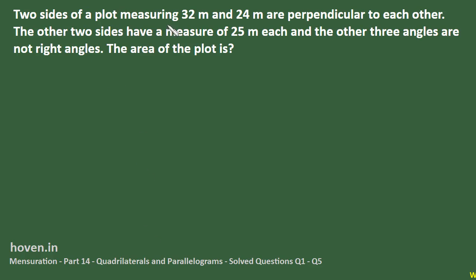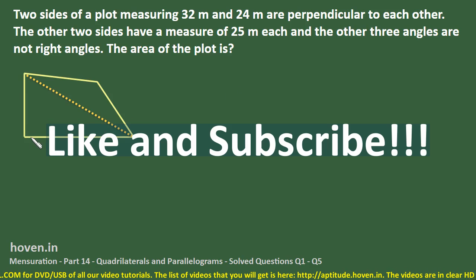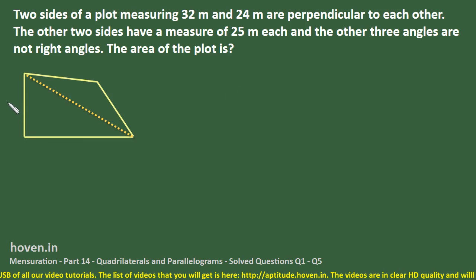Two sides of a plot measuring 32m and 24m are perpendicular to each other. The other two sides have a measure of 25m each and the other three angles are not right angles. The area of the plot has to be found out. The plot is obviously a quadrilateral. Let us draw a schematic for the plot. We can take the plot to be like this. The two sides, we can take this is 32, this is 24 and they are perpendicular, so this angle is 90 degrees.